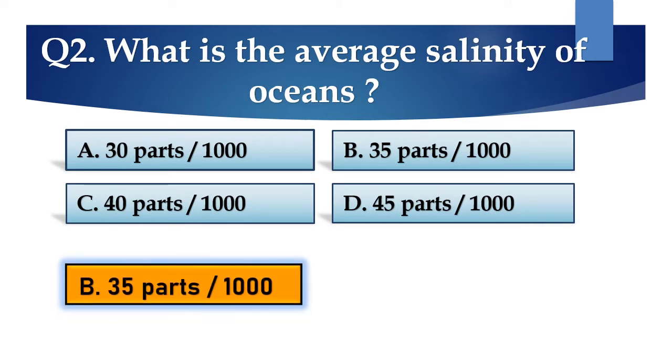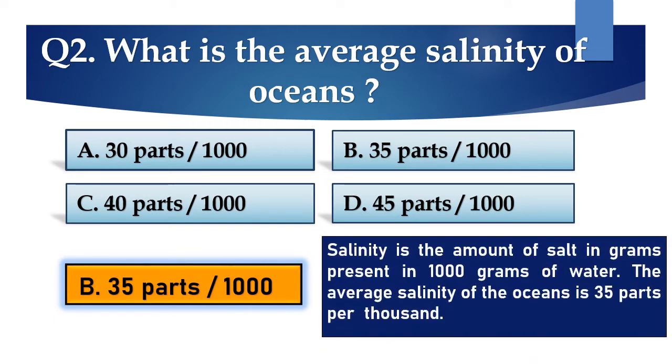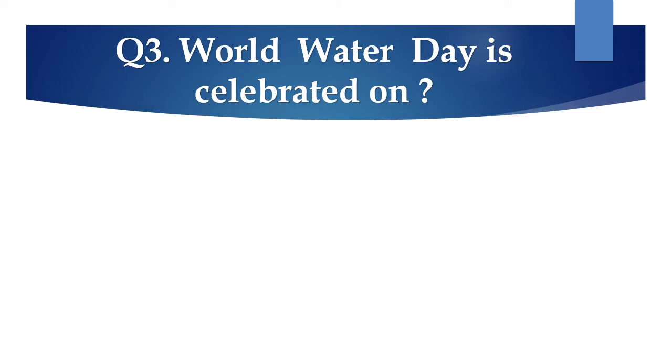And the answer is B. 35 parts per thousand. Salinity is the amount of salt in grams present in 1000 grams of water. The average salinity of the oceans is 35 parts per thousand.